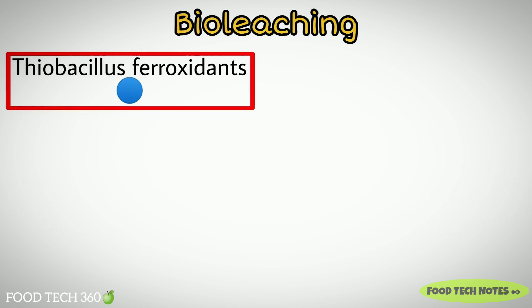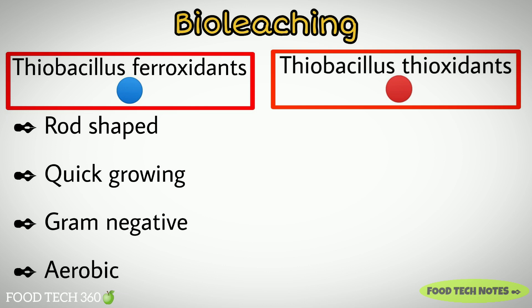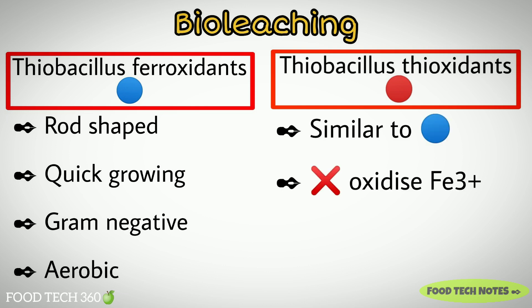Thiobacillus ferroxidans are of rod shape, relatively quick-growing, gram-negative and strictly aerobic. Thiobacillus thioxidans are very similar to Thiobacillus ferroxidans but they cannot oxidize ferric.